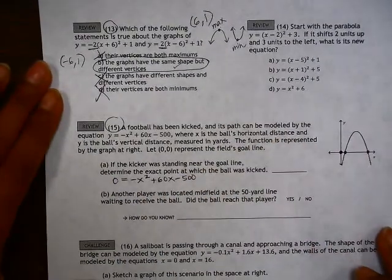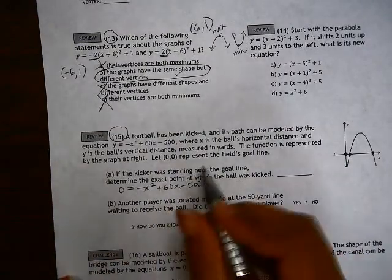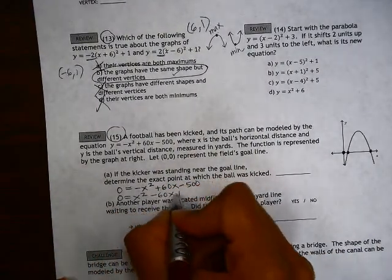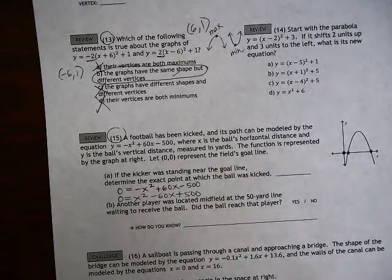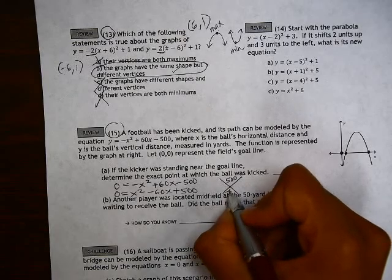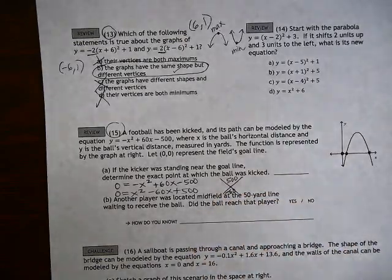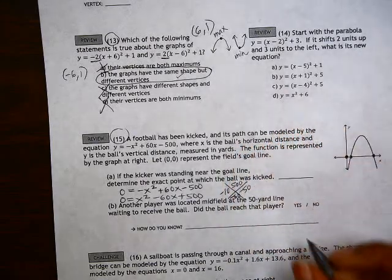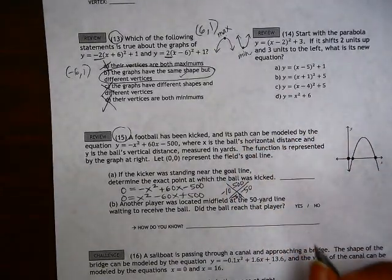So if I wanted to factor this, it will help here to just divide everything by negative 1. So I'll get x squared minus 60x plus 500. And let's see if we can factor this so we can solve for x. So positive 500, negative 60. That would be negative 10 times negative 50, which also add up to negative 60.